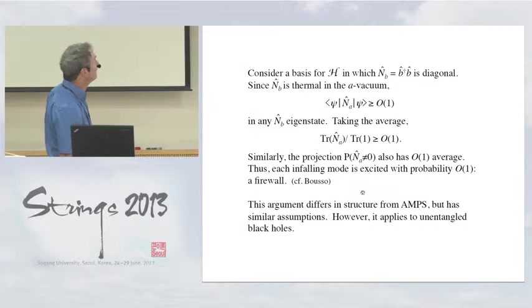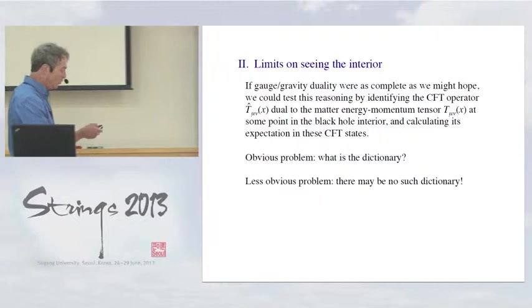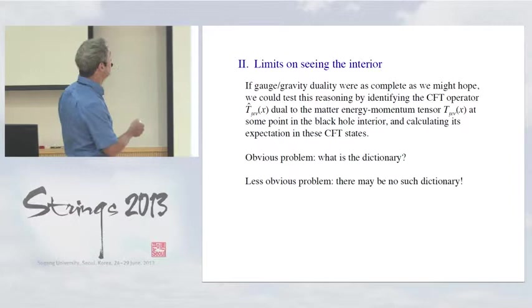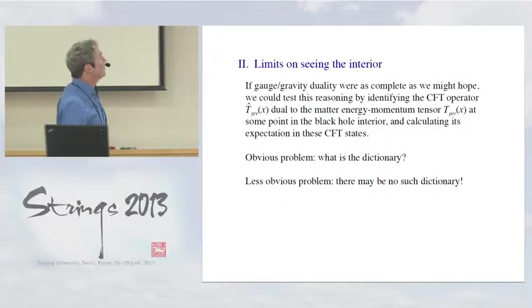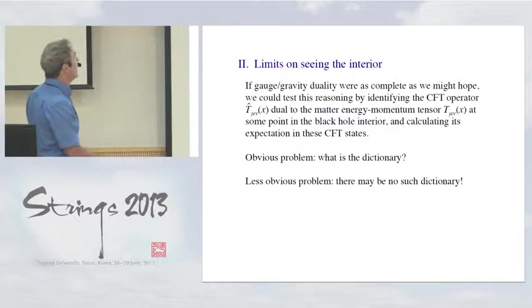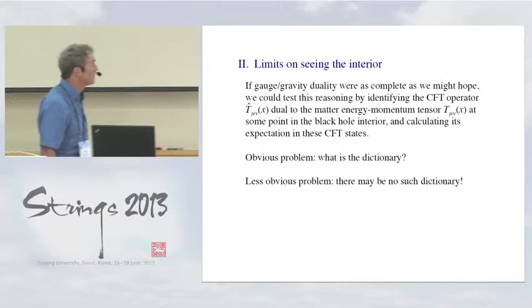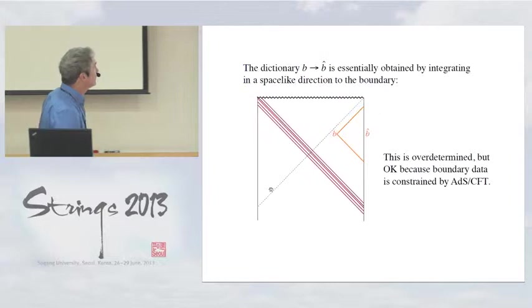And so what it says is that the typical, not all of them, but the typical pure, typical black hole state in AdS-CFT has a firewall unless there's some mistake in the reasoning. So that's part one, the firewall argument. Now, so now that I've said this, one way you could check this reasoning is the following. Since we have this theory of quantum gravity in the bulk, let us find what operator in the conformal field theory is dual to the matter-energy-momentum tensor at some point behind the horizon and see, calculate this expectation value and see if it's true that this is non-zero, that we're in an excited state. Now, having said that, there are two problems. The obvious problem is, what is the dictionary?